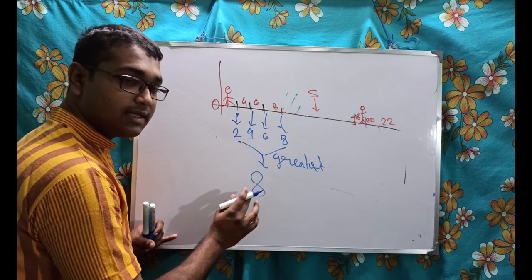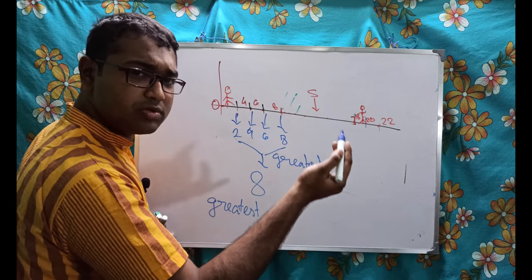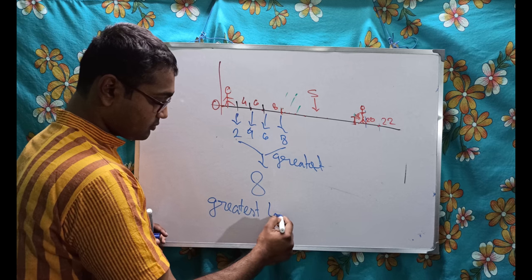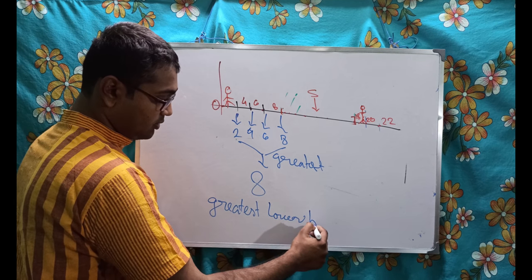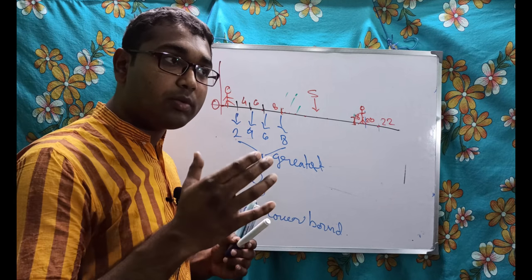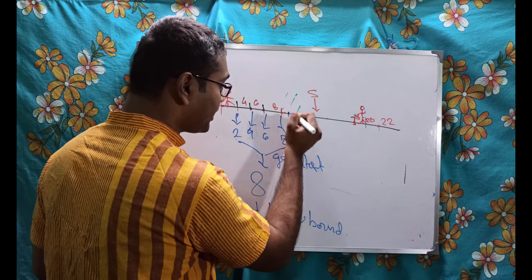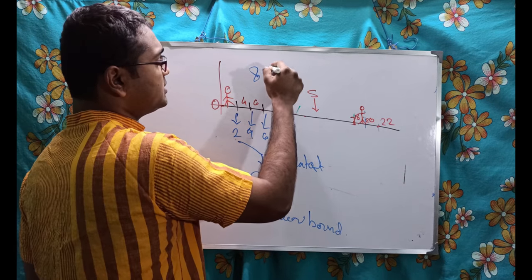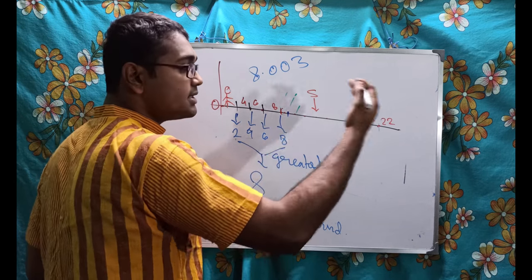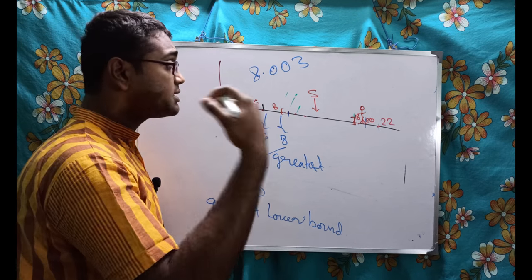Greatest lower bound. Obviously can any bound, lower bound, greater than this one? Let us assume I am taking one element from here - let it be 8.003. But it is inside the set. And even if 8 was not inside the set, in the next lecture I shall talk about the open set, close set. If 8 was not inside the set, then also was it the lower bound? Obviously not.